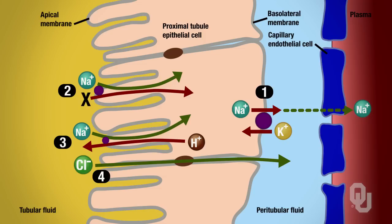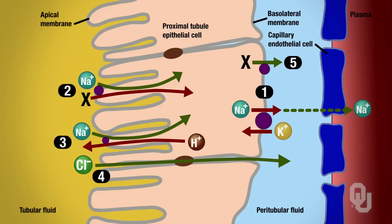We have one more type of transport on the basolateral membrane. We used sodium to bring X into the cell, so X is now at a high concentration and can move out of the cell using a carrier protein. Number five is therefore facilitated diffusion — facilitated diffusion of X across the basolateral membrane.